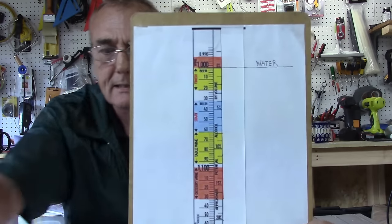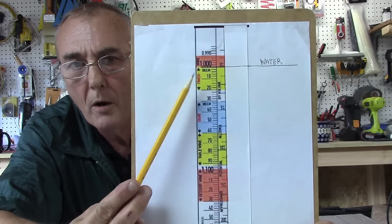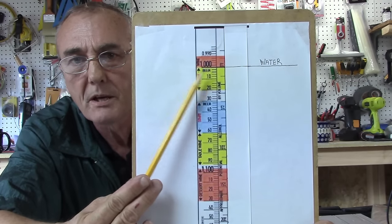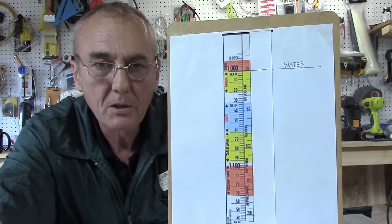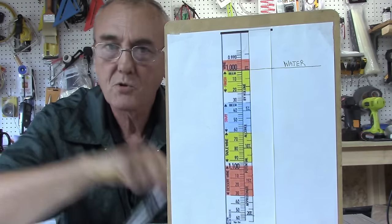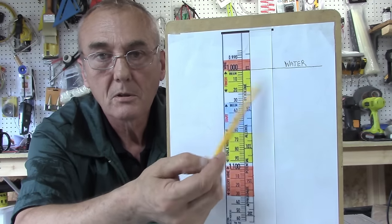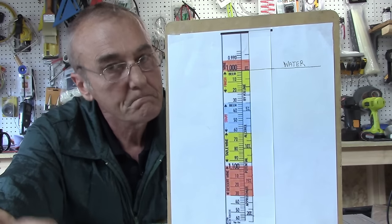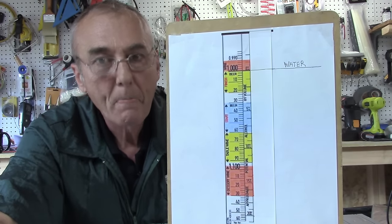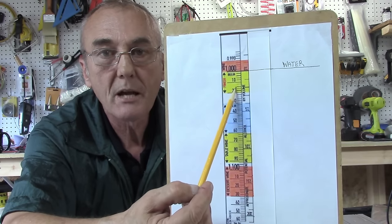Remember, 1.000 is water - so there's your data point. If you had a cylinder and you drop the hydrometer into that cylinder of water, it would float right here at 1.000. That's your data point.